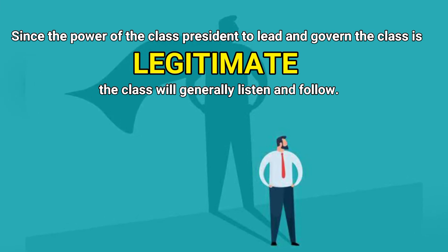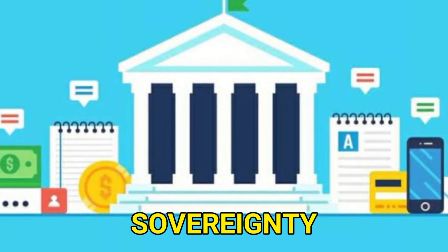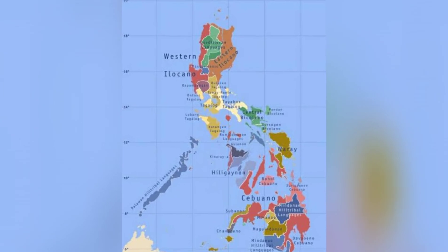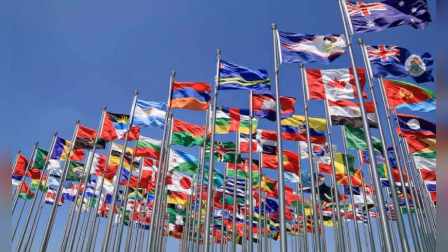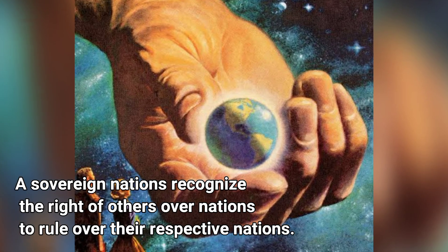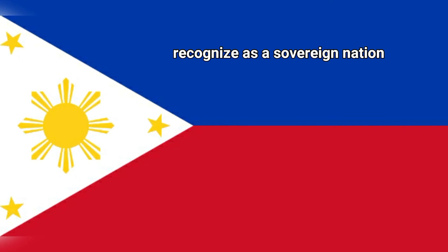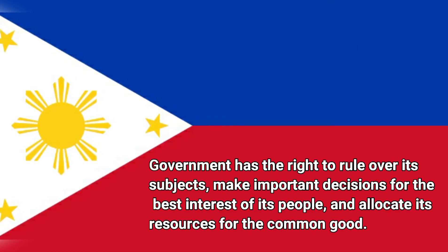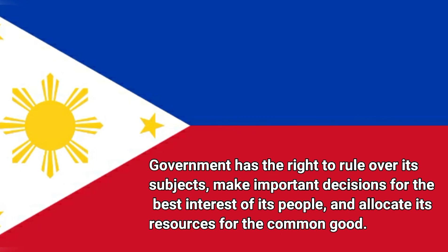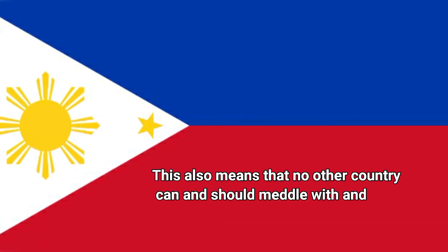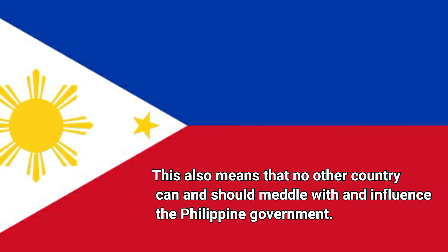Sovereignty is the right of a government to exist and rule over a certain territory and its subjects. This is defined by the Montevideo Convention of 1933, wherein a sovereign nation recognizes the rights of other sovereign nations to rule over their respective nations. The Philippines is recognized as a sovereign nation. Thus, its government has the right to rule over its subjects, make important decisions for the best interests of its people, and allocate its resources for the common good. This also means that no other country can or should meddle with and influence the Philippine government.